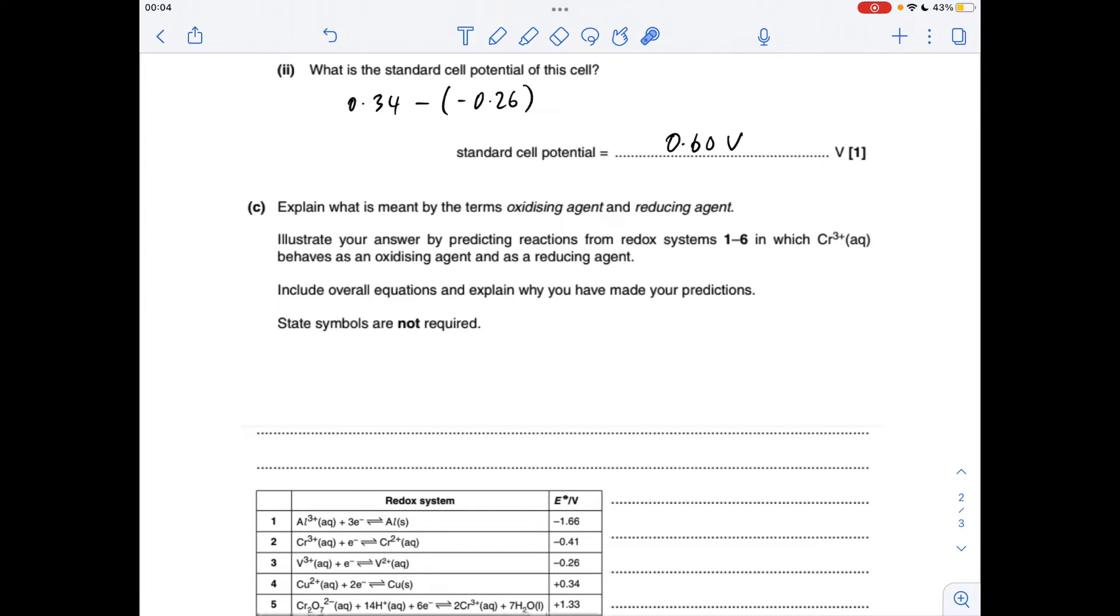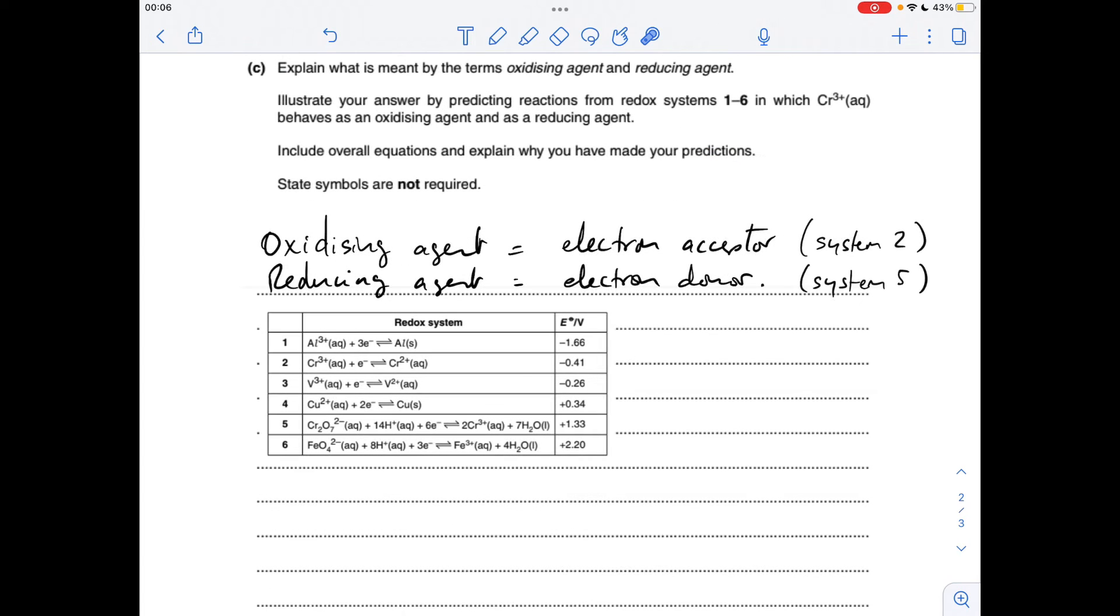Moving on to part C now, we've got to define the terms oxidizing and reducing agents. So electron acceptor for an oxidizing agent, electron donor for a reducing agent.